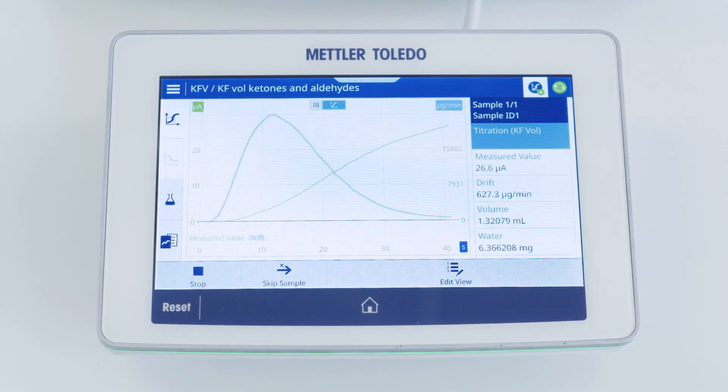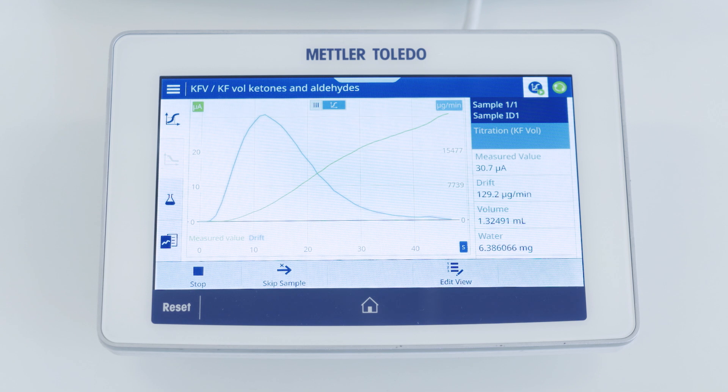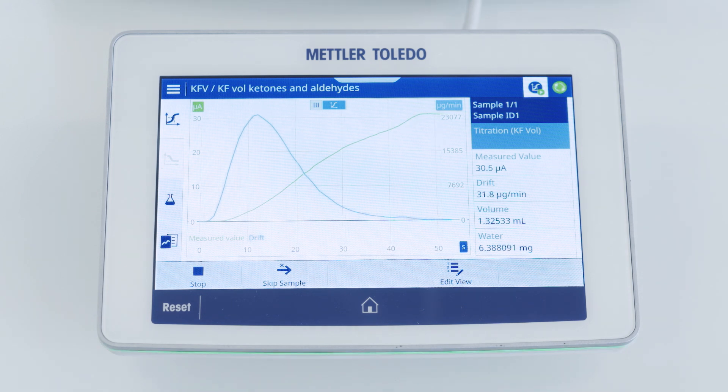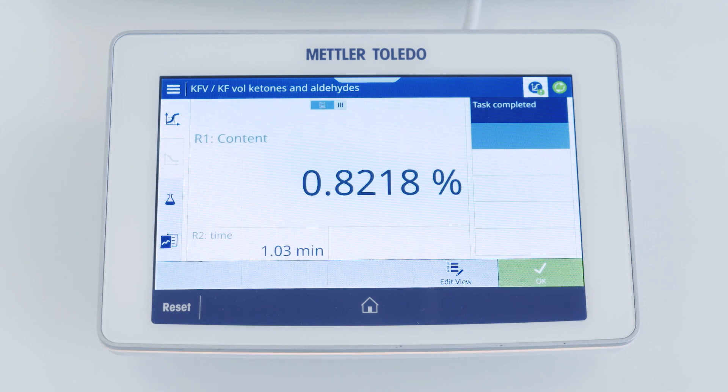Now the sample is being titrated and we can see the drift approaching back to zero and the measured value approaching 30 microamperes which is the endpoint of our titration. And we have our result.